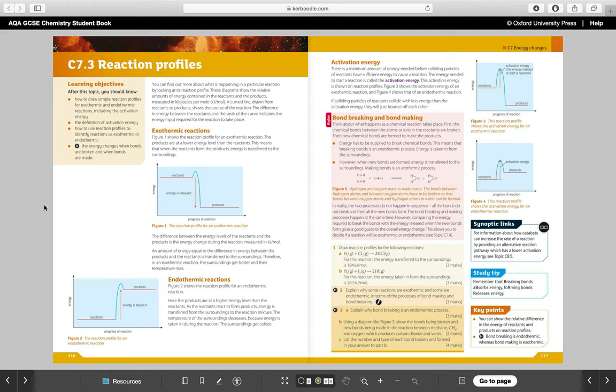We're moving on from looking at equilibria and reversible reactions into specifically endothermic and exothermic. You've met endothermic and exothermic when we were talking about reversible reactions, where we came across the idea that exothermic means releases heat to the surroundings and making things hotter, and endothermic being taking in heat from the surroundings, making things colder.